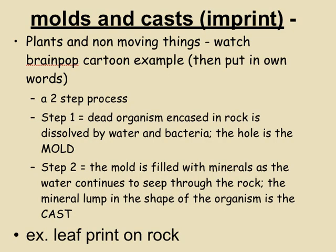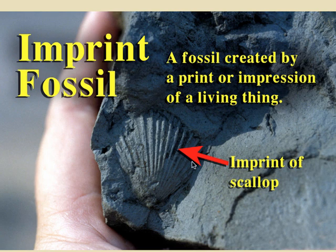Next comes molds and casts, which we often call imprints. Molds are different from casts — there's a process to get a mold, and then something happens to get a cast. You can think of imprints basically as not the actual fossil itself; it's kind of like a fingerprint or an imprint of the scallop shell into this mud, which might have become shale.